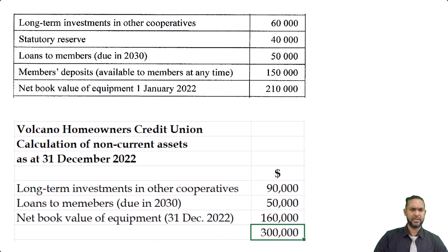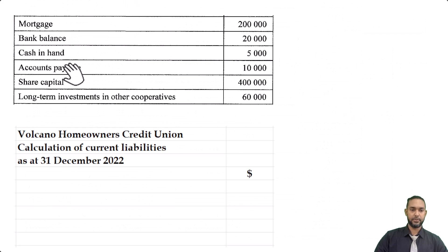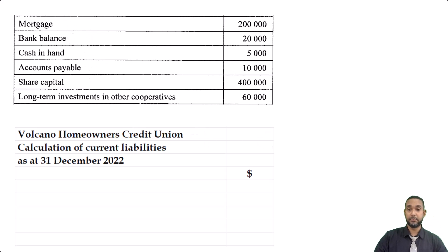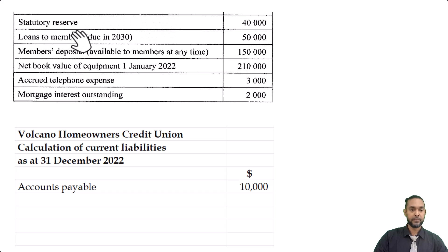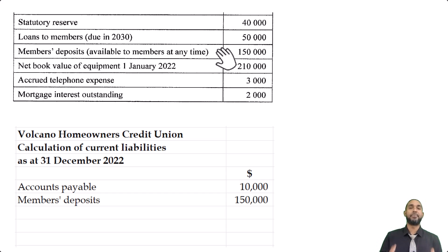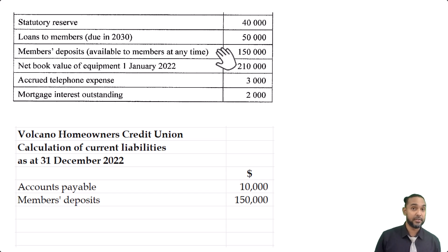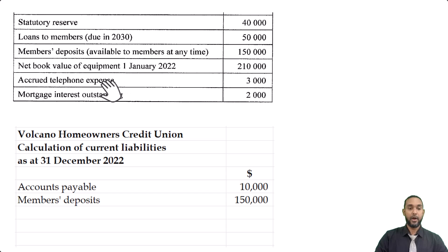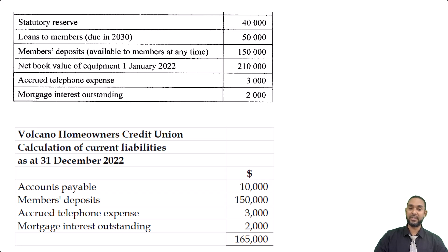Now for current liabilities. Mortgage — non-current liability. Bank balance — no. Cash in hand — no. Accounts payable — yes. Share capital — no. Long-term investments — no. Statutory reserve — no. Loans to members — no, that's an asset. Members deposits — yes, $150,000. It's like a bank: money deposited is a liability since it must be repaid at any time, so it's always current. Accrued telephone expense and mortgage interest outstanding are both accrued expenses. The subtotal for current liabilities is $165,000.